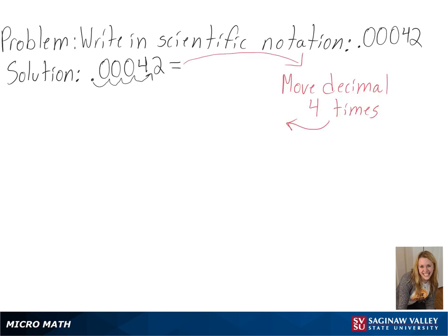And since this is a small number, we know our exponent associated with our number will be negative. So we get 4.2 times 10 to the negative 4th power as our final answer.